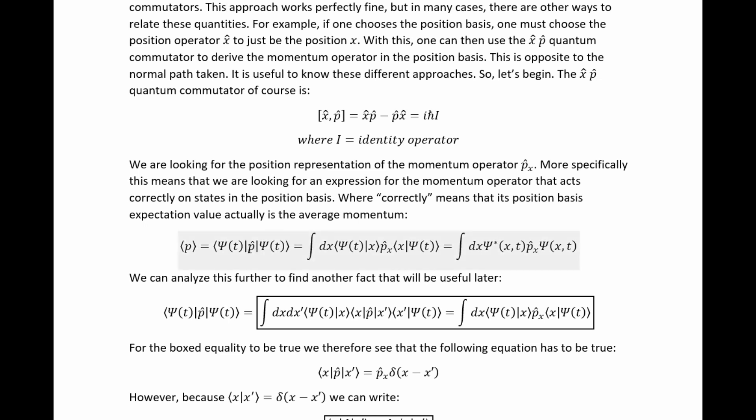If we take the abstract momentum operator, the operator whose position representation we're trying to find, we know that the average momentum, the expectation value, takes this form. So what we're looking for is a way of expressing this momentum operator that allows us to, in the usual way, get the expectation value of the momentum operator correctly in the position basis.